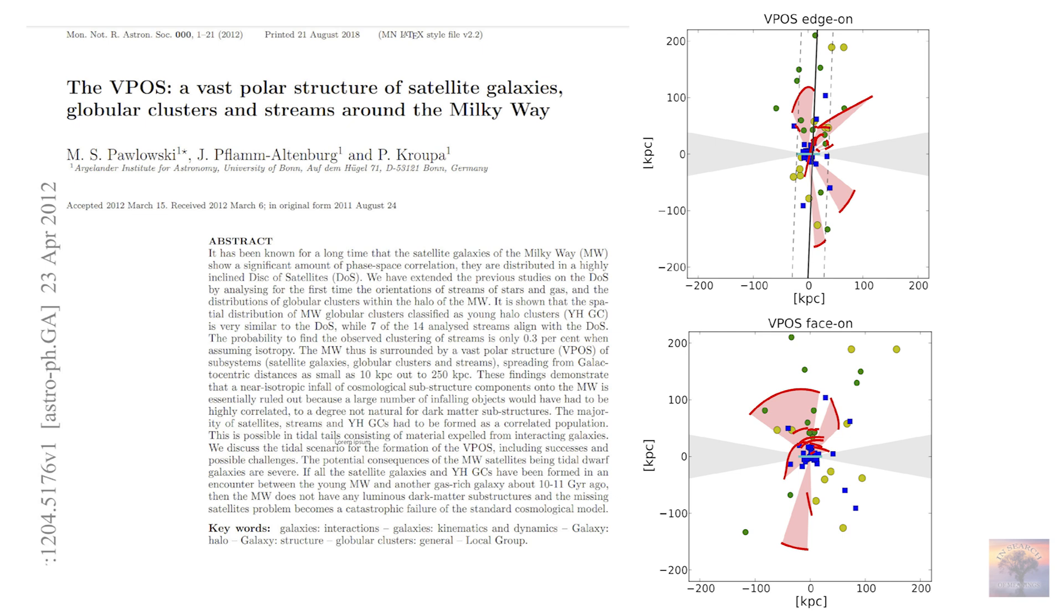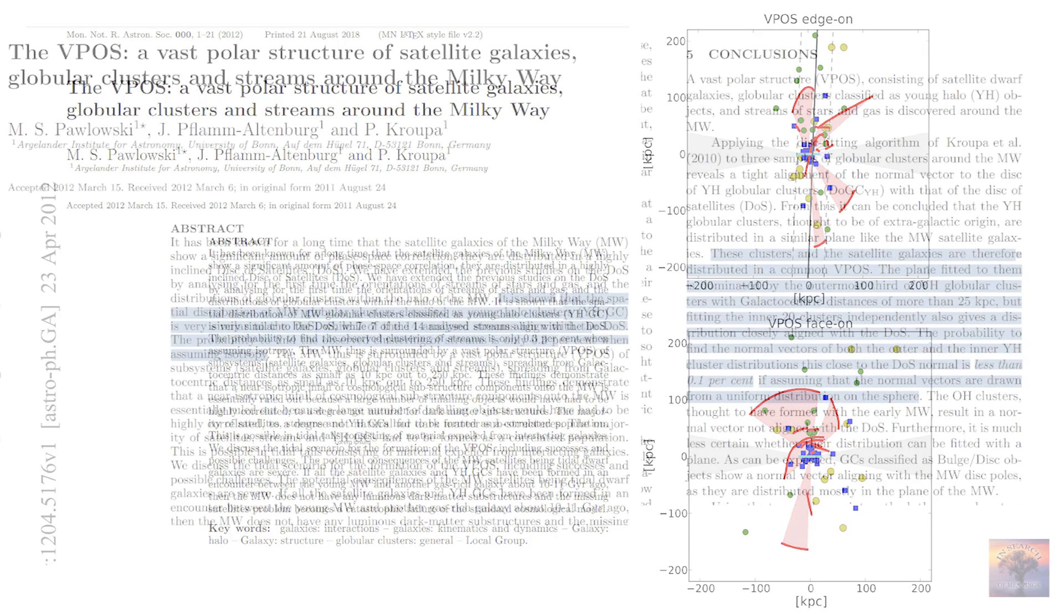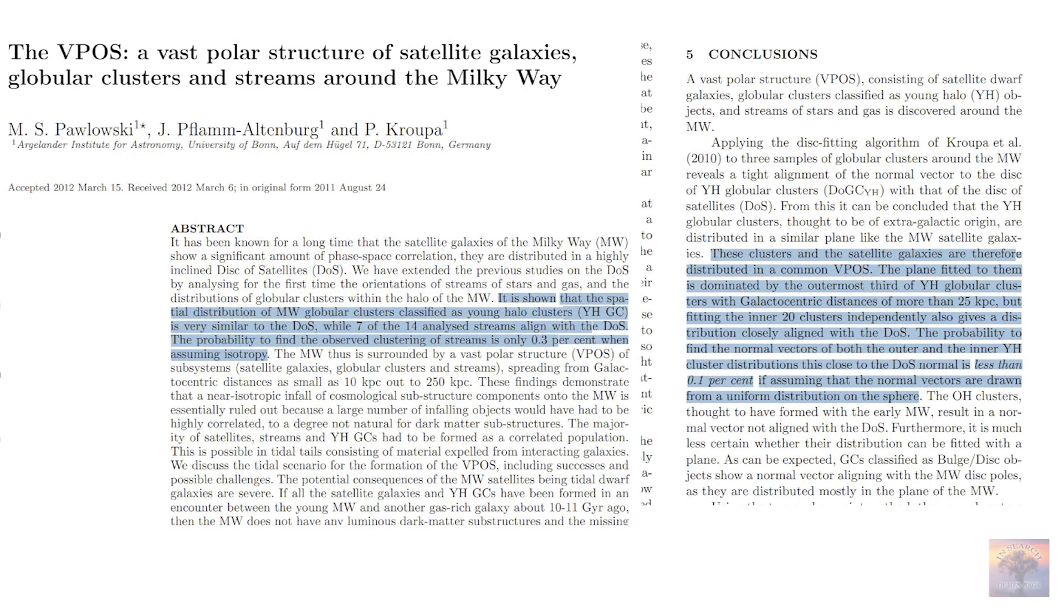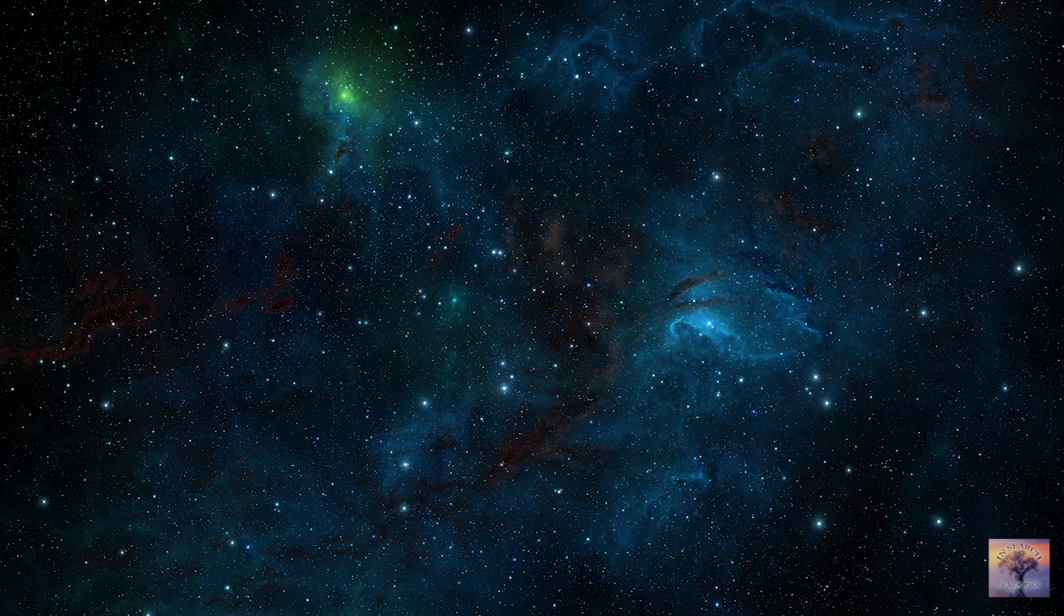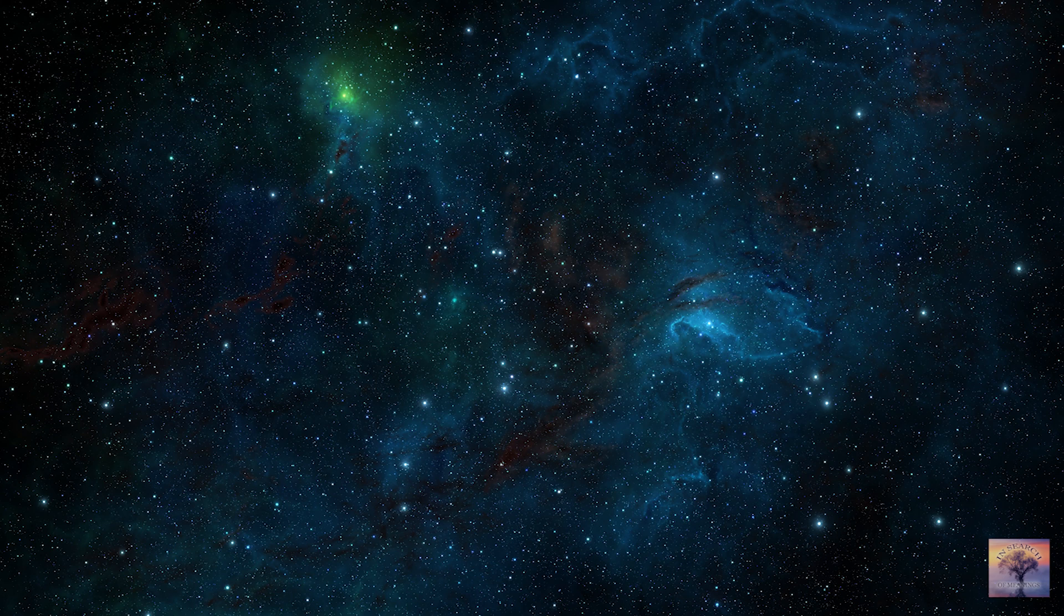But why bother with this, you ask? Well, the satellite galaxies have an ordered structure, so what of that? But the fact is that such a structure is practically impossible within the framework of Lambda-CDM cosmology. And the existence of this structure seems to hint to us that Lambda-CDM cosmology, or otherwise cosmology with cold dark matter, is not correct. This fact haunts scientists.